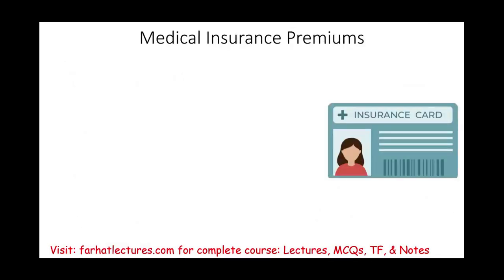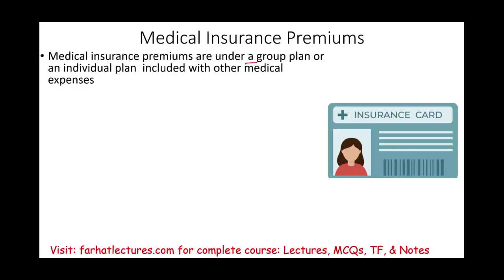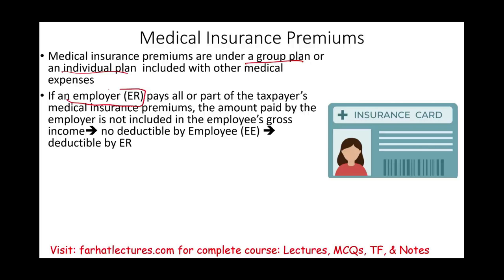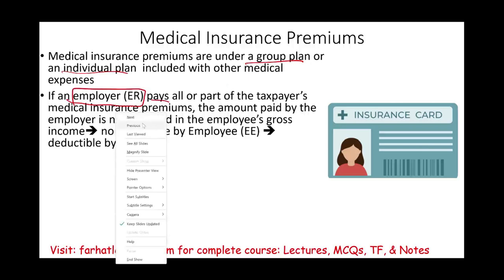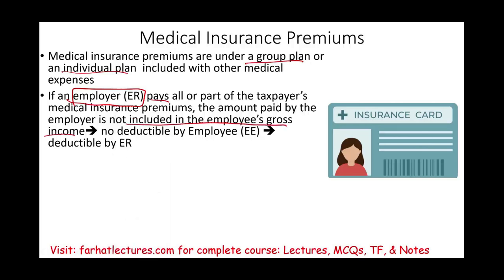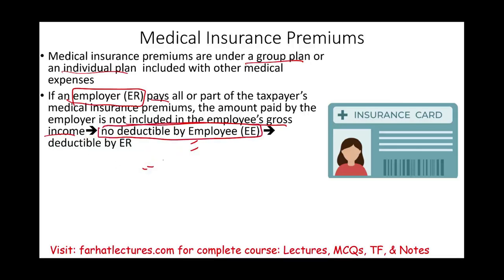Medical insurance premiums, under either a group or individual plan, are included with other medical expenses. When an employer pays your medical insurance, that amount is excluded from your income — you cannot deduct it because you haven't paid tax on that money. However, the employer deducts it as a business expense. If you are self-employed, insurance premiums paid for medical coverage for yourself, your spouse, and dependents are deductible as a business expense for AGI.